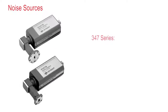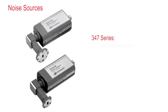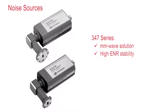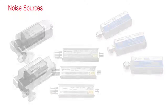The 347 series is Keysight's millimeter wave solution with high ENR stability in the long term. This stability means longer calibration cycles and more reliable measurements. The sources are banded and interfaced with waveguides rather than cables or coax.